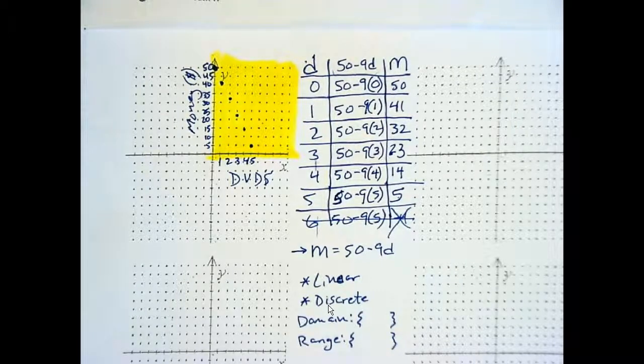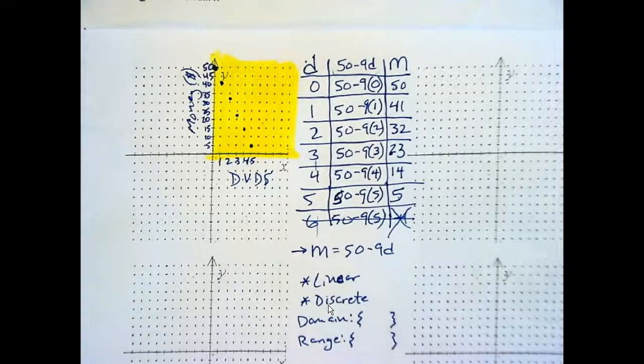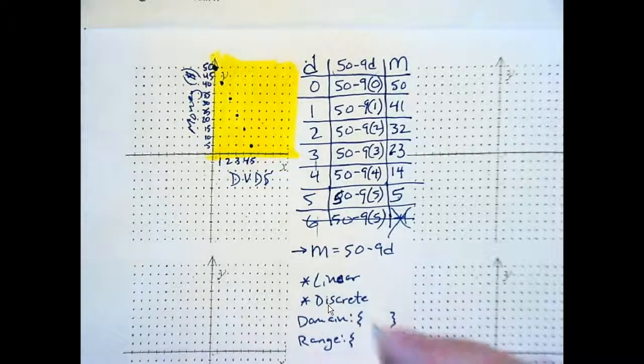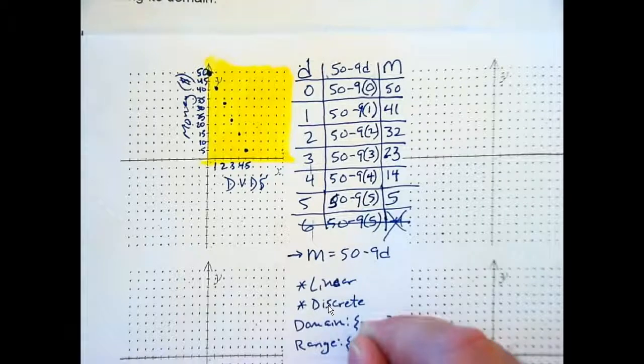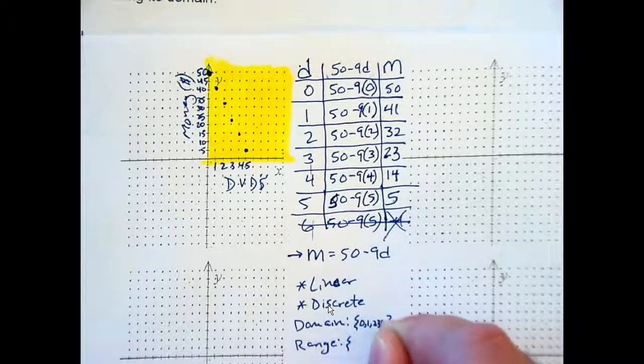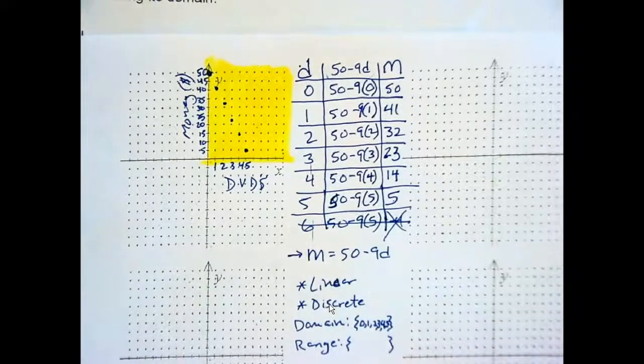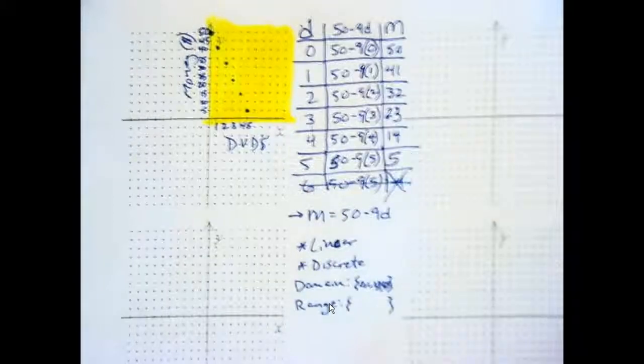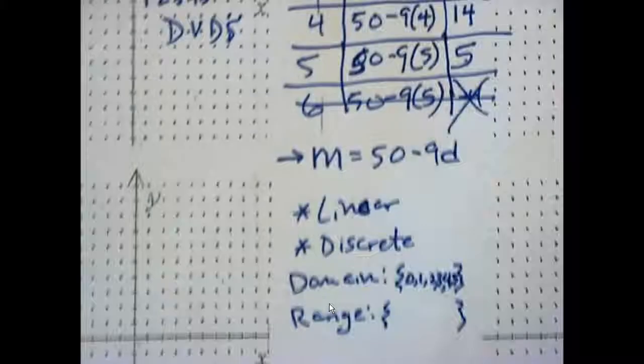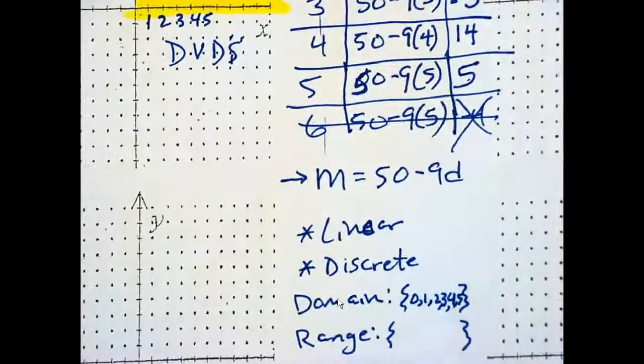What's my domain? Mac, what do you think? Yeah, 1, 2, 3, 4, 5, and what else? 0, 0, 1, 2, 3, 4, 5. Could have given myself a little more room. Don't forget your cool guy brackets there. But domain is 0, 1, 2, 3, 4, 5.